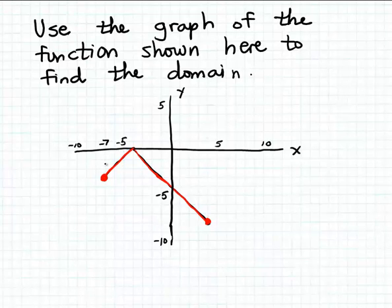We cannot use an input number less than minus 7 because if you try using a number less than minus 7 as input, that won't result in a meaningful output value. And likewise, on the right, we can't use an input number larger than 4 because if we try to use an input number larger than 4, we won't get a matching output value.